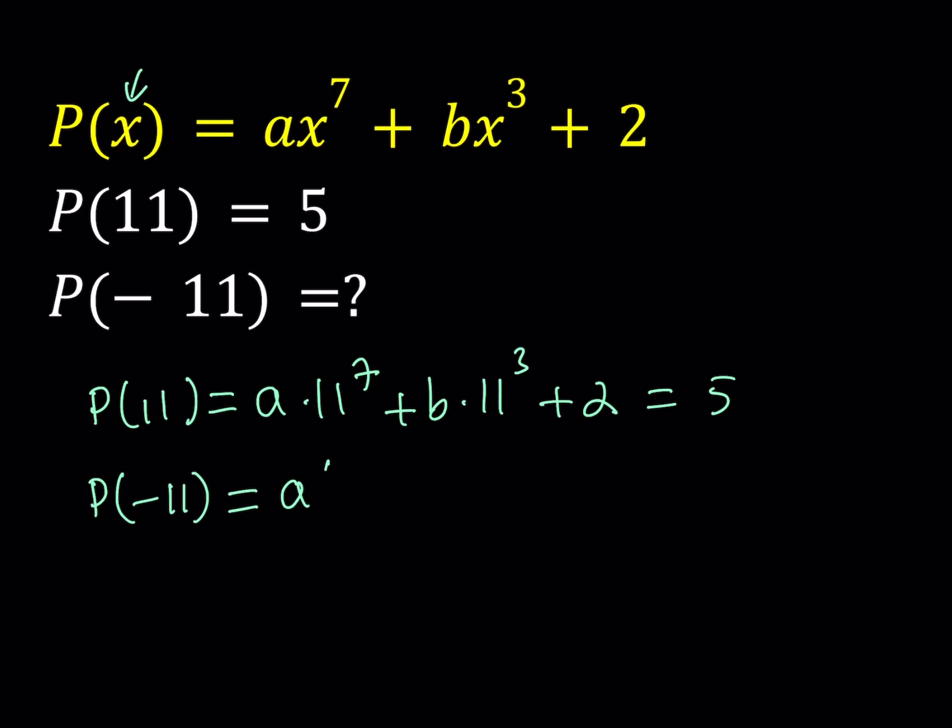You can go ahead and replace P of X with negative 11 and see what happens. Once you do, you're going to get A times negative 11 to the 7th power plus B times negative 11 to the 3rd power plus 2. And then that's what I'm trying to find. So this is what I'm looking for.